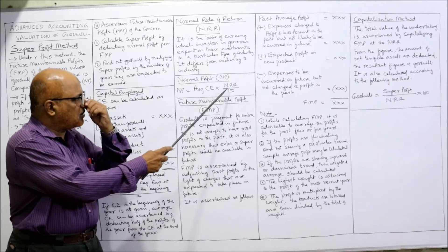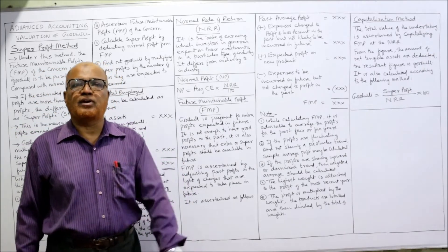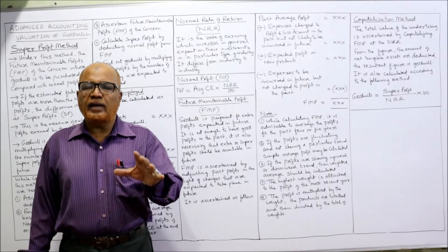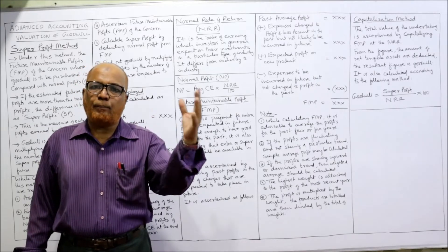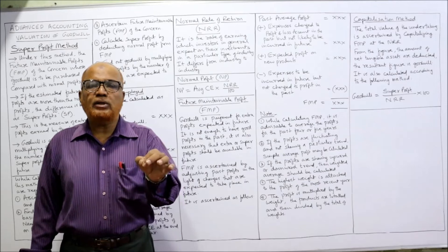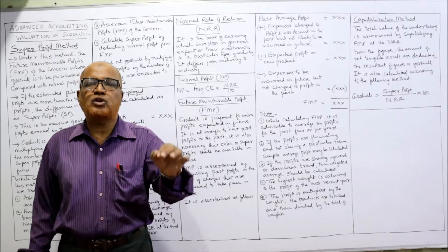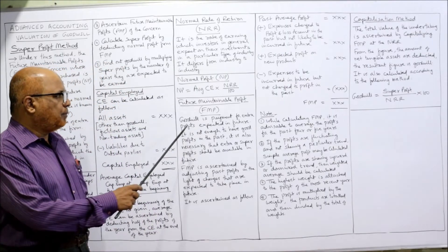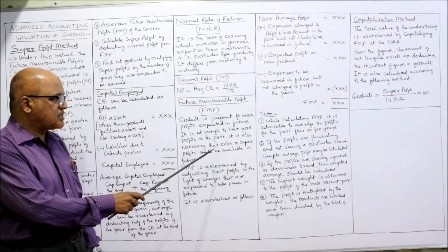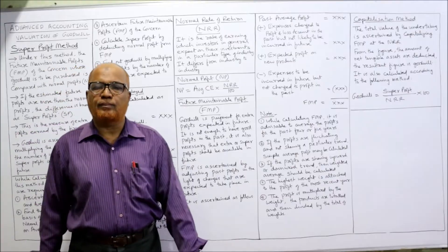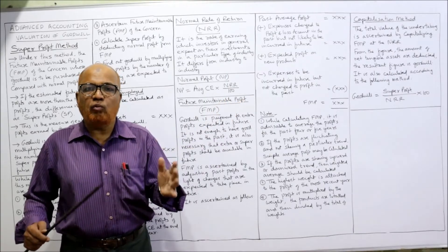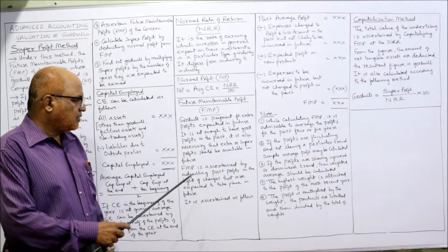Average Capital Employed × Normal Rate of Return ÷ 100 gives you normal profit. Now, Future Maintainable Profit (FMP) is very important for calculating goodwill. It is not the profit earned in the past — we need what profit will be earned in the future. Goodwill is payment for extra profit expected in future. It is not enough to have good profit in the past; the super profit must also be available in the future.